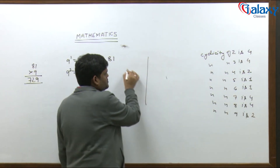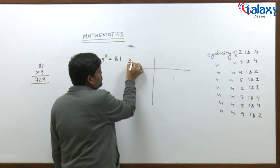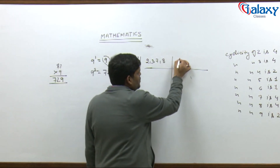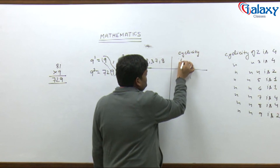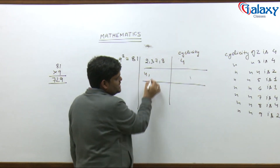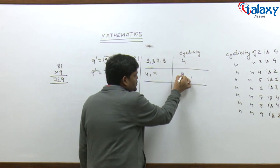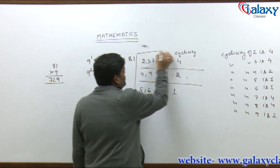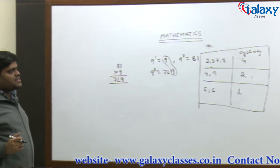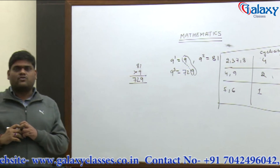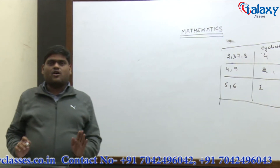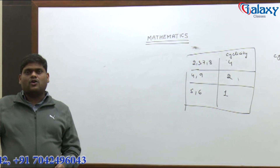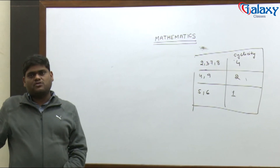Now we can make a summary table. The numbers 2, 3, 7, and 8 have a cyclicity of 4. The numbers 4 and 9 have a cyclicity of 2, while 5 and 6 have a cyclicity of 1. This is the cyclicity concept. In the next video, we will see how to use this cyclicity to find what digit will be at the unit place of a given expression, so keep watching.